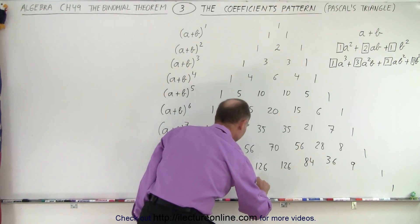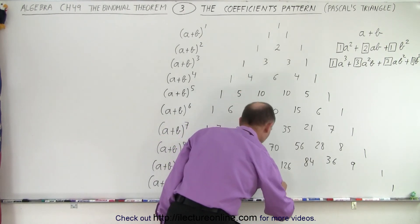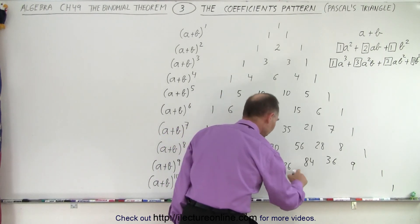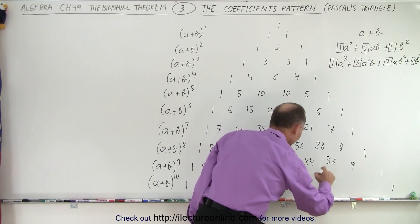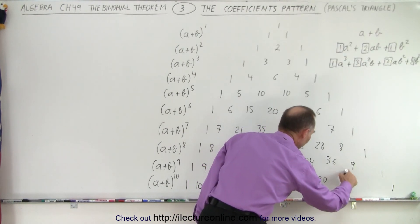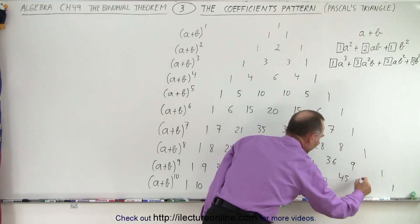126 plus 126 is 252. 126 plus 84, that would be 210. 84 plus 36, that would be 120. 36 plus 9, 45. And 9 plus 1, that is 10.